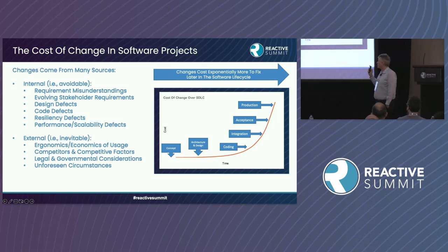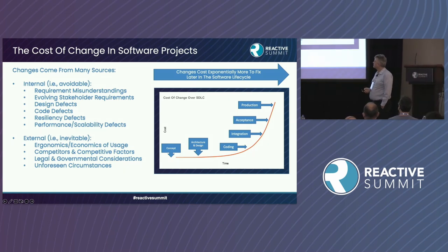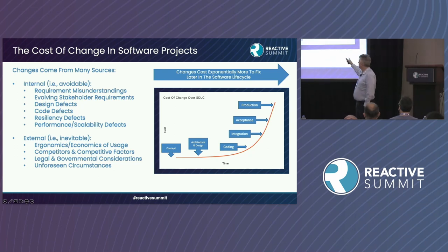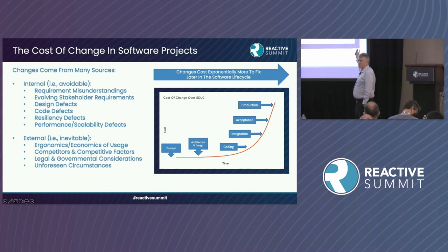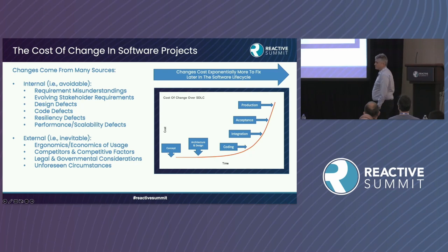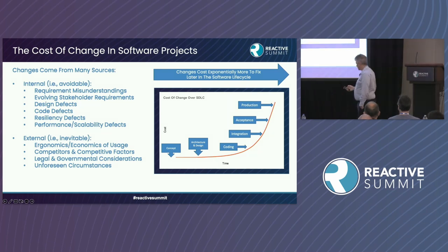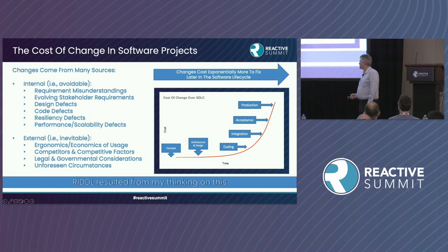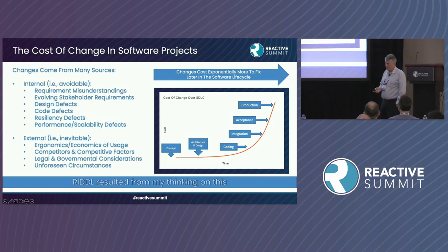We've got requirements — stakeholders change their minds — design defects, code defects, resiliency defects. We want to shift left on this whole problem, because the further left we can get back to the conceptual area, the less it's going to cost when those defects and changes occur. That should be old news to everybody, but that's where RIDDLE started.